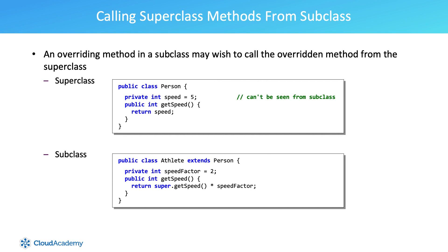Calling superclass methods from a subclass. An overriding method in a subclass may wish to call the overridden method from the superclass. When a subclass overrides a method of its superclass, the superclass's method is hidden. This causes a problem if we want to use the superclass's method instead of the subclass's. To access the superclass's method, we can use the super keyword.